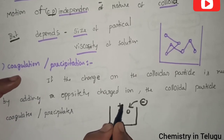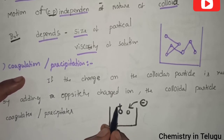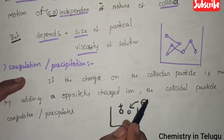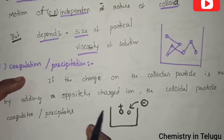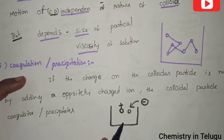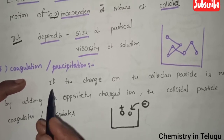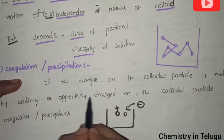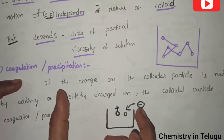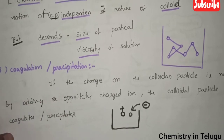Colloid particles have a positive or negative charge. By adding the opposite charge, we neutralize the colloid particles. When the charges on colloid particles are neutralized by adding an opposite charge, the colloid particles undergo coagulation and precipitation. These are the 5 properties of colloids.